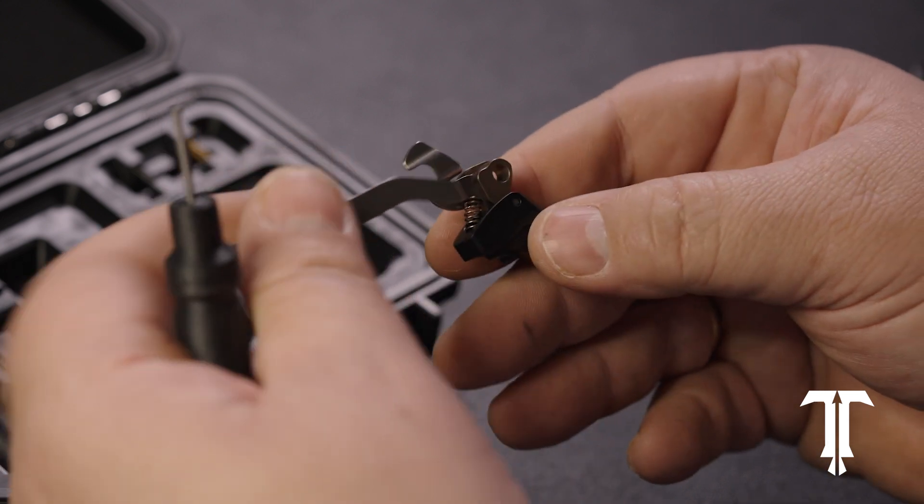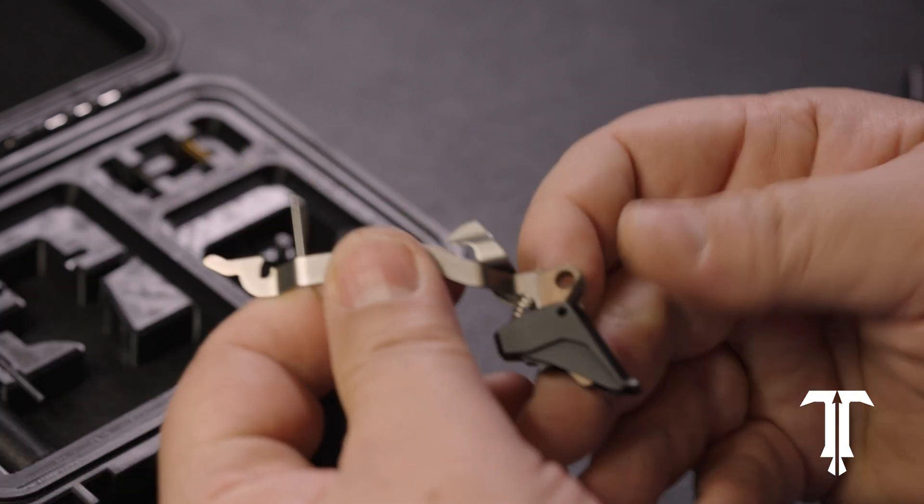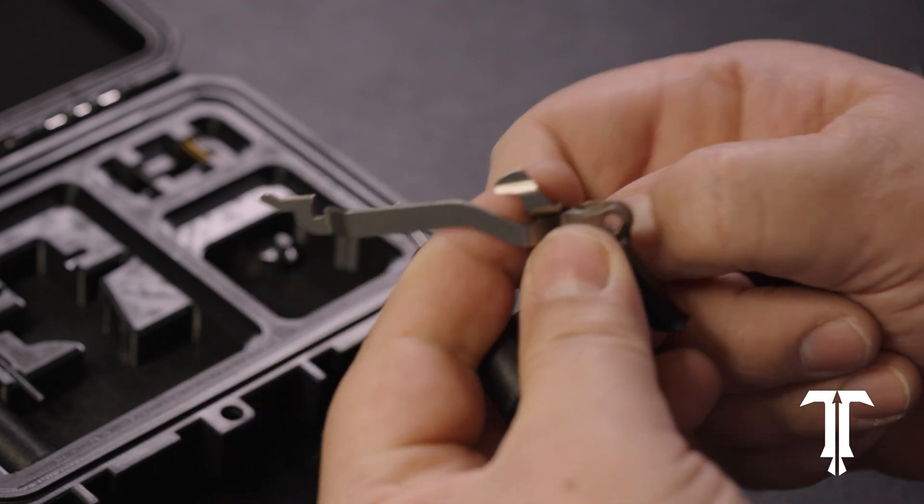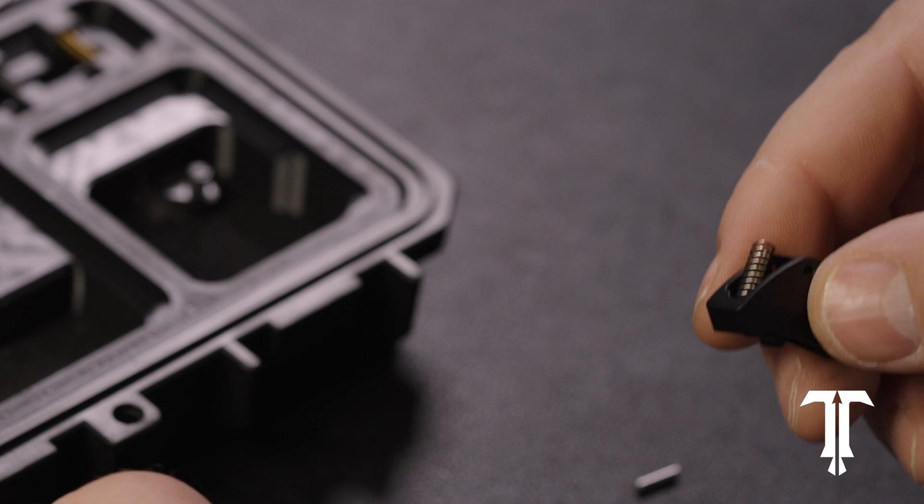To replace the take-up spring with the lighter one in the box, we first push out the pivot pin using the poker. Once the pivot pin has been removed, you can slide off the trigger shoe and remove the spring.